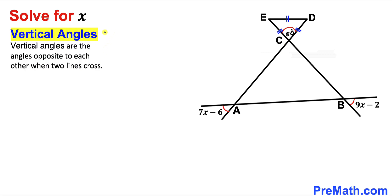Let's recall vertical angles. Vertical angles are the angles opposite to each other when two lines cross each other. Here in our case, this angle and this angle are vertical angles and they are congruent. Likewise, this angle and this angle are vertical angles as well.